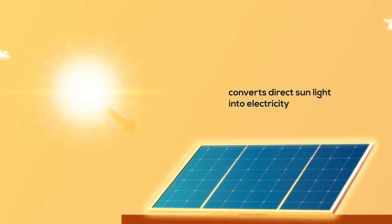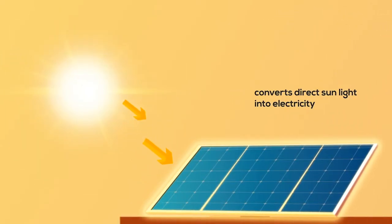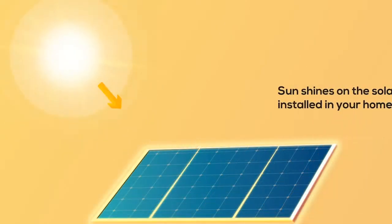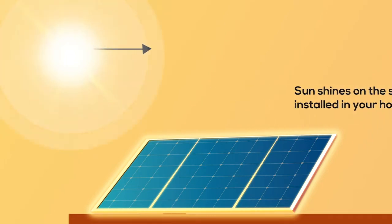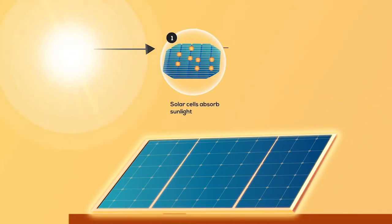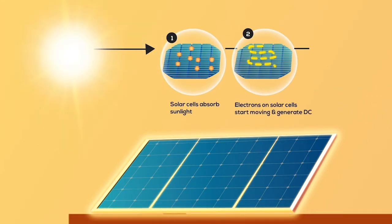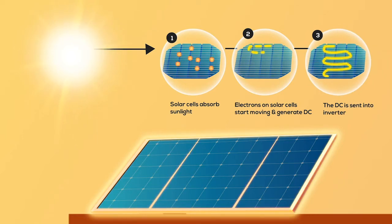The solar photovoltaic system converts the direct light of the Sun into electricity. When the Sun shines on the solar panels installed in your home, electrons within the solar cells start to move around, which produces DC or direct current energy.